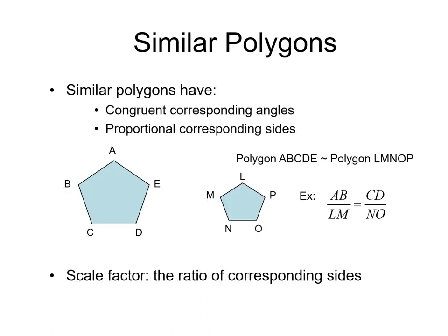What are similar polygons? Two conditions must be met for similar polygons: congruent corresponding angles and proportional corresponding sides.